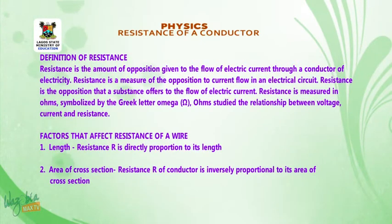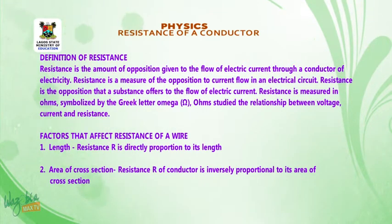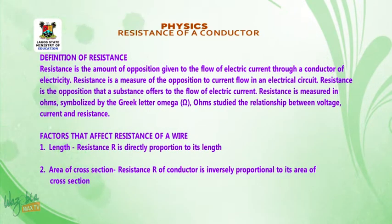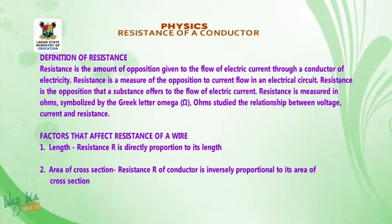Let's look at factors that affect the resistance of a wire. What are the factors? One: the length. When we talk about the length, we are talking about how long is the wire. Resistance is directly proportional to its length. The longer the wire, the more the resistance, because electrons move further in the material.